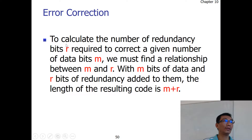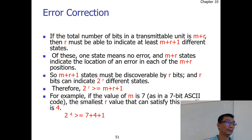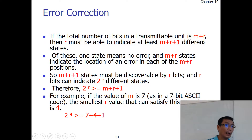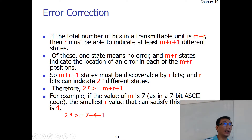So you have R redundant bits and you're going to correct M bits. The total length of the code will be M plus R. If the total number of bits transmitted is M plus R, then R must be able to indicate at least M plus R plus one different states.